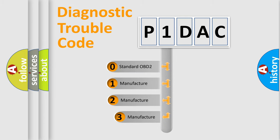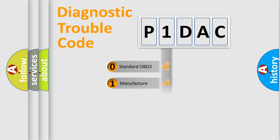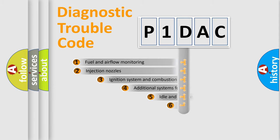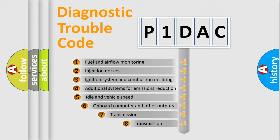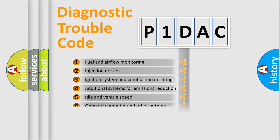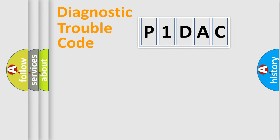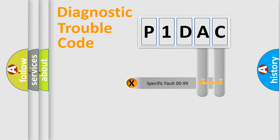If the second character is expressed as zero, it is a standardized error. In the case of numbers 1, 2, or 3, it is a more manufacturer-specific expression of a car-specific error. The third character specifies a subset of errors. This distribution is valid only for the standardized DTC code.